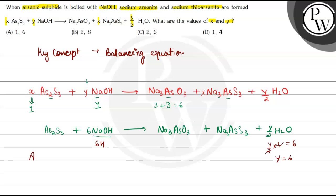Now the reaction comes out to be As2S3 plus 6 NaOH reacts to form Na3AsO3 plus Na3AsS3 plus 3 H2O. So X will be 1 and Y which is equal to 6.